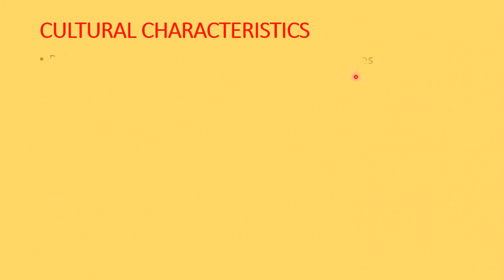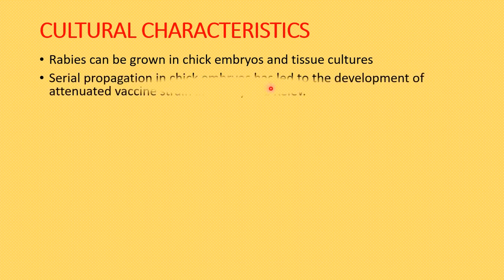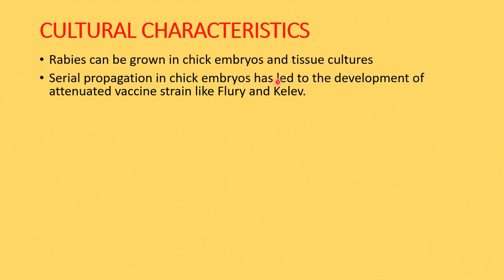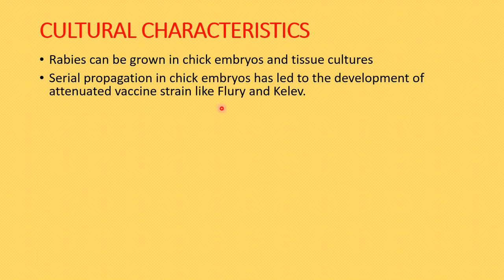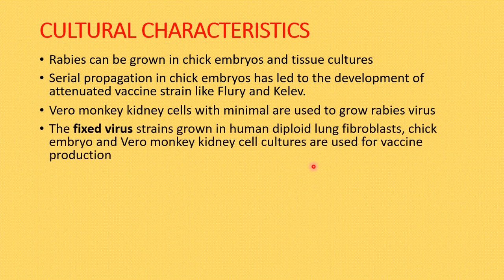Moving to the cultural characteristics: the rabies virus can be grown in chick embryos and tissue cultures. In chick embryos, the virus is usually inoculated into the yolk sac. Serial propagation in chick embryos has led to the development of attenuated vaccine strains called Flury and Kelvin. Adaptation to duck eggs has also been used to prepare inactivated vaccines.